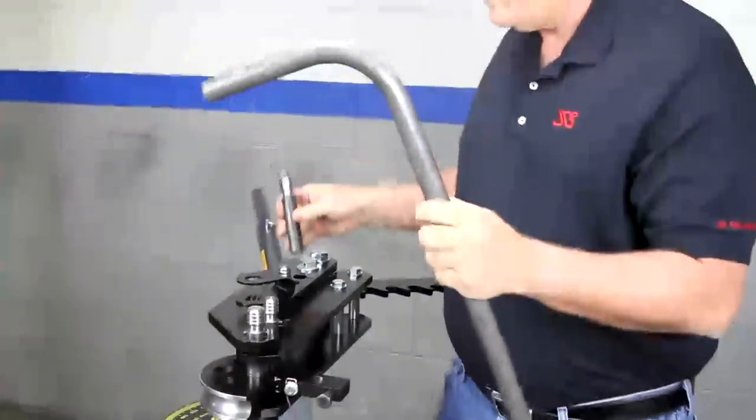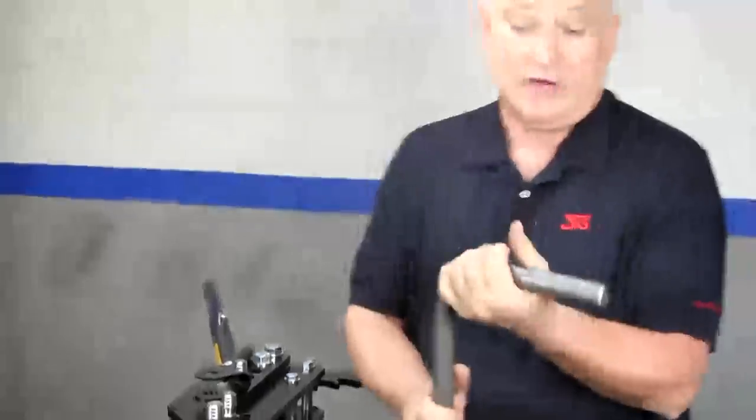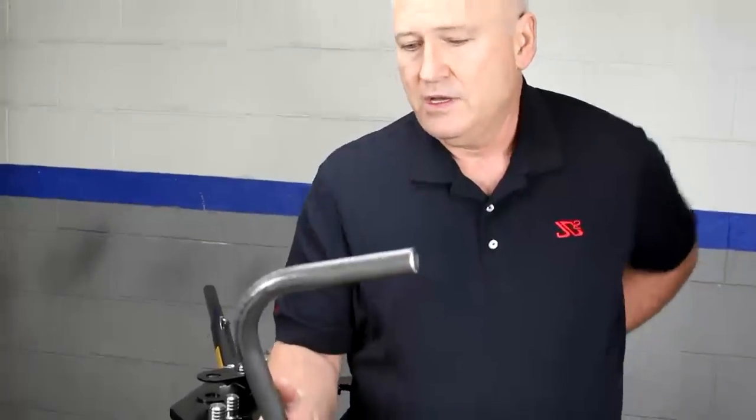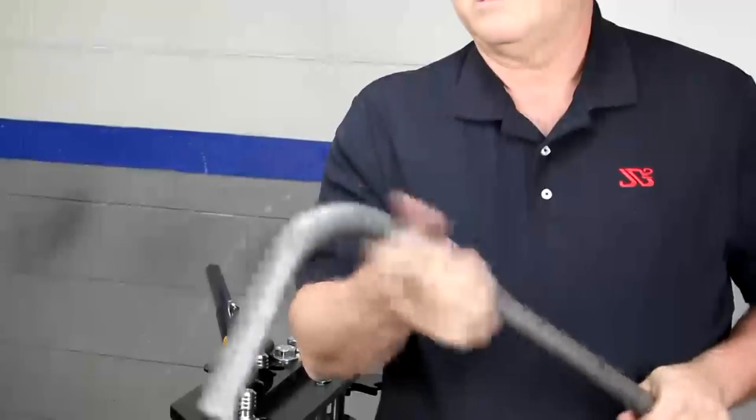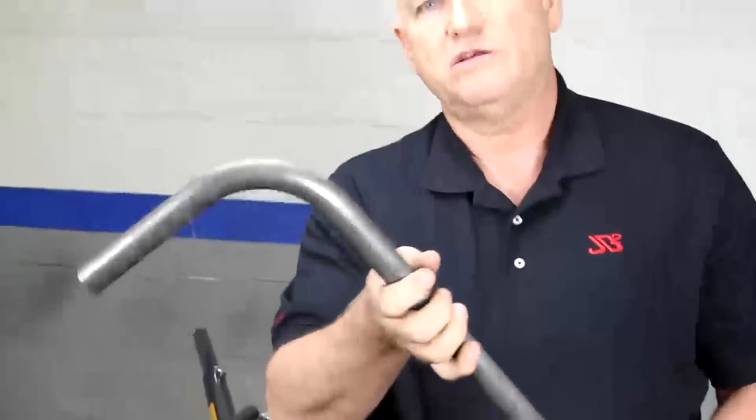Now that's a one-inch, three-inch radius. Once again, it's our most popular die by actually a large factor, just because so many different kinds of race cars use that particular die. If you notice the bend quality, that's pretty much what you're going to get with a J.D. Squared bender.